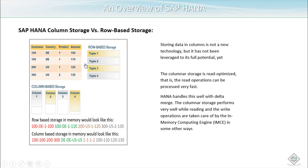In column-based storage, data of similar data types is stored sequentially, which is why compression and aggregation are very fast. In row-based storage in memory it looks like 100, D100, D100 in sequence, but column-based storage groups similar data types together. HANA handles this well with data merge. Column storage performs very well for reading, and write operations are taken care of by the in-memory computing engine, so it is optimized for both reading and writing.